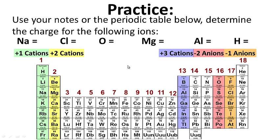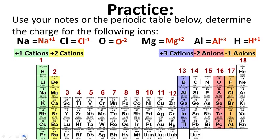Practice. Use your notes and the periodic table to determine the charge for the following ions. Go ahead and pause this while you work and hit play when you're ready to check your work. Sodium is plus-1. Chlorine is minus-1. Oxygen is minus-2. Magnesium forms plus-2. Aluminum forms plus-3. And hydrogen forms plus-1. Hopefully you got those right.